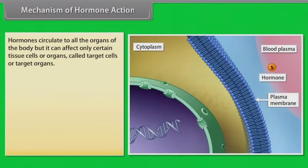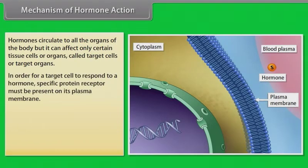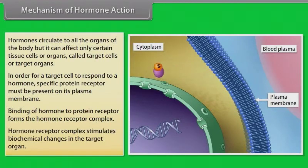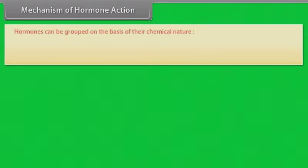Hormones circulate to all the organs of the body but can affect only certain tissue cells or organs, called target cells or target organs. In order for a target cell to respond to a hormone, a specific protein receptor must be present on its plasma membrane. Binding of a hormone to a protein receptor forms the hormone-receptor complex, which stimulates biochemical changes in the target organ. Hormones can be grouped on the basis of their chemical nature.